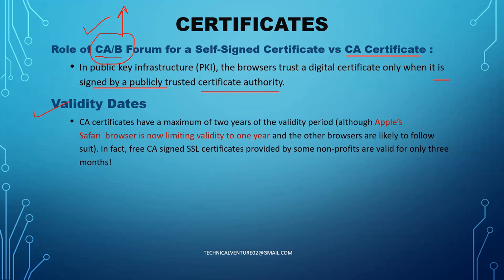Regarding validity dates: CA certificates have a maximum two-year validity period. Apple Safari has already limited this to one year, and other browsers are likely to follow. Free CA-signed SSL certificates provided by some non-profits are valid for only three months. These validation dates and renewal procedures are regulated by the CA/Browser Forum. Even if a user purchases a certificate for five years, they must go through validation and installation again after every two years.